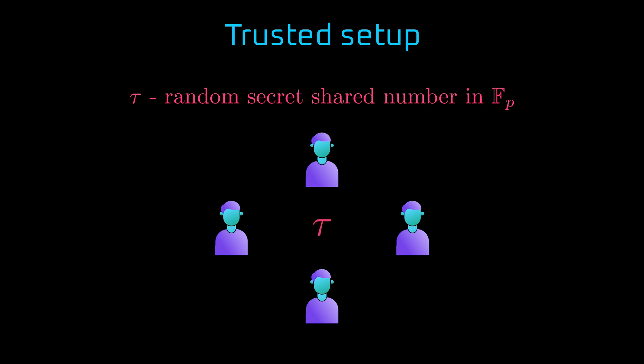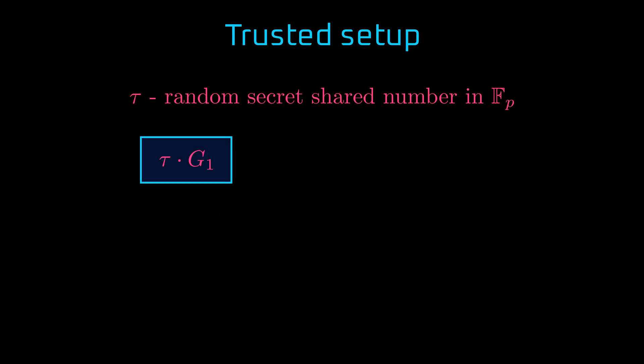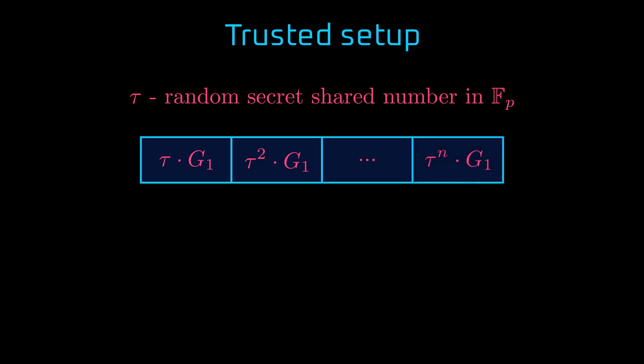Trusted setup is a construct where a secret number, often denoted as tau, is generated randomly within a finite field and is shared among all parties involved. However, nobody knows its value. How come? The number is shared in an encrypted form as a point on an elliptic curve, encrypted by the same method we already talked about many times. We will multiply it by a generator point. What is more, we will store not only encrypted tau, but also subsequent powers of tau: from tau to the first power, tau squared, all the way to the power of n, where n is the size of the trusted setup.